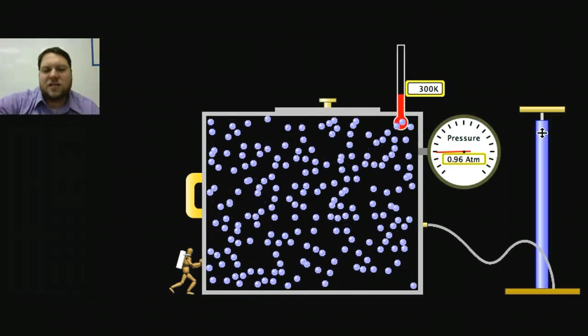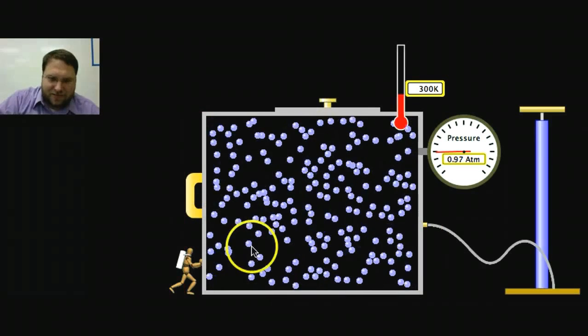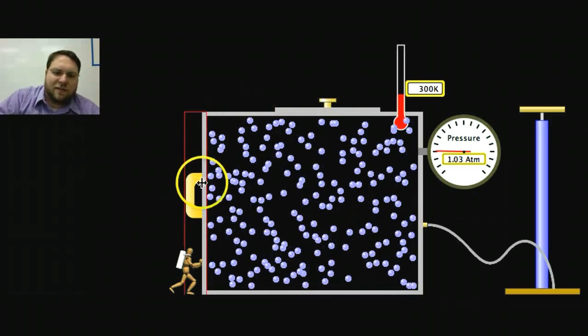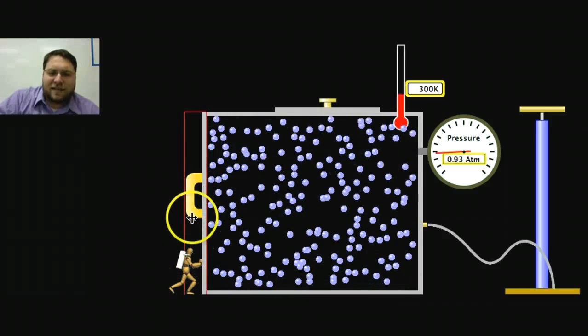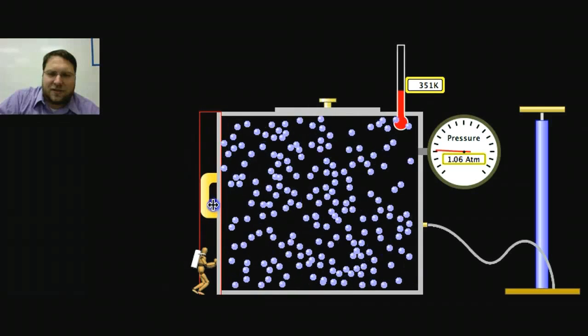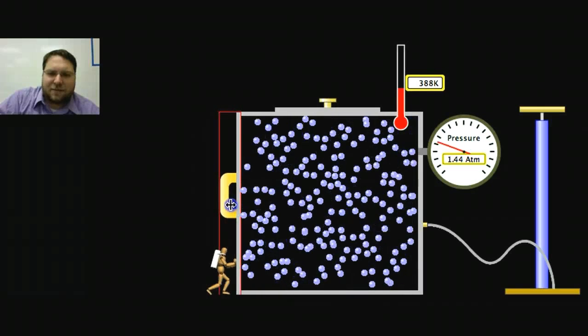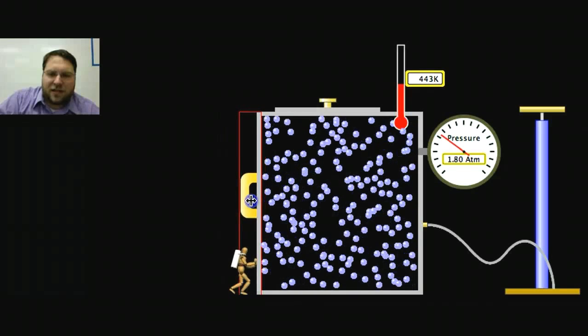I can also change this by changing the area against which these push. So right now, they're pushing on this whole area here. If I take the little man in the corner and I push this way, there's less space for those atoms to bump into. And you'll notice that as I push, the pressure increases.